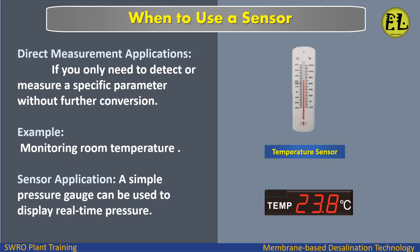When to use a sensor: direct measurement applications. If you only need to detect or measure a specific parameter without further conversion — for example, monitoring room temperature — a sensor is appropriate. A simple pressure gauge can be used to display real-time pressure.